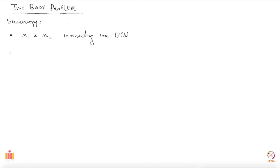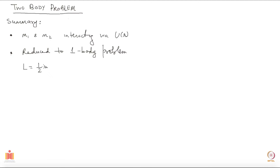We saw that we could reduce this two-body problem to a one-body problem. We wrote down the Lagrangian as L equals half mu r-dot squared minus u of r, where mu is the reduced mass of the system.